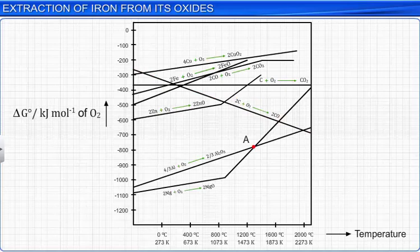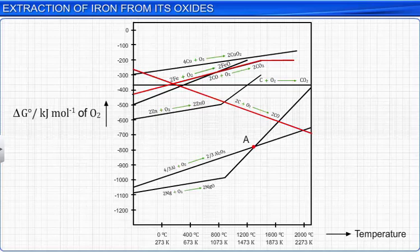Now, from the graph, you can see that at a temperature above 1073 Kelvin, carbon reduces iron oxide to iron, but itself undergoes oxidation to form carbon monoxide. Thus, the carbon–carbon monoxide oxidation line crosses the iron oxide–iron reduction line and then remains below it.